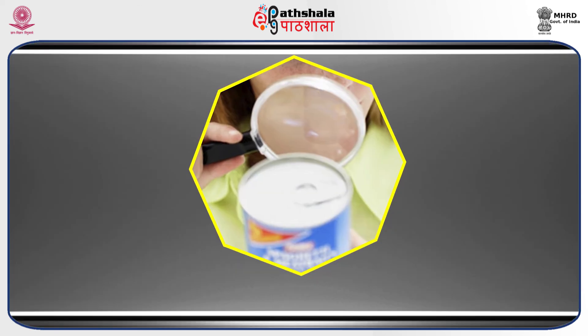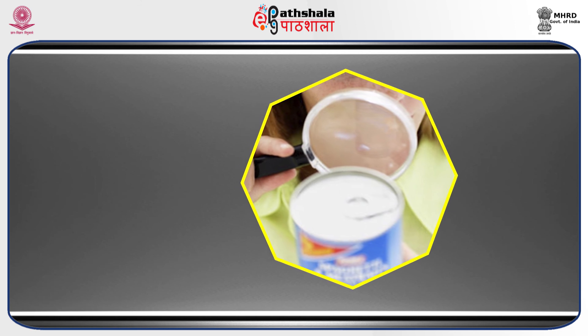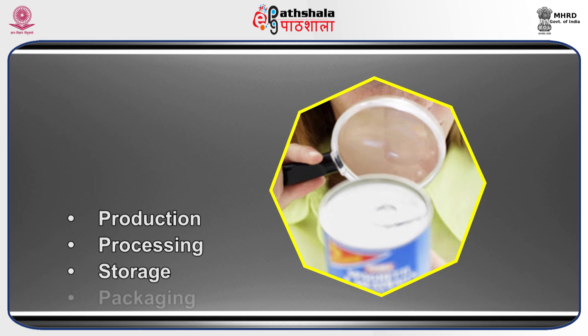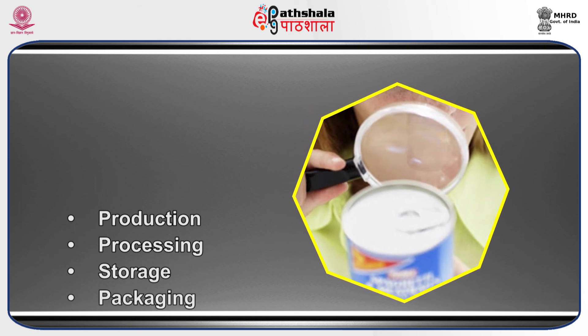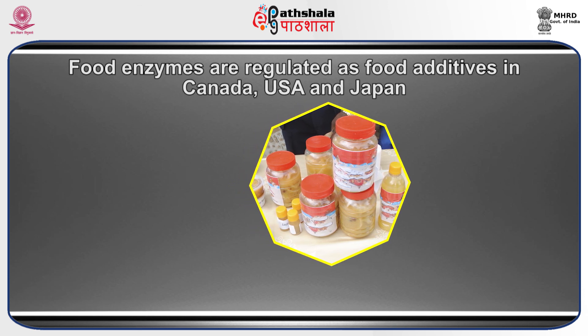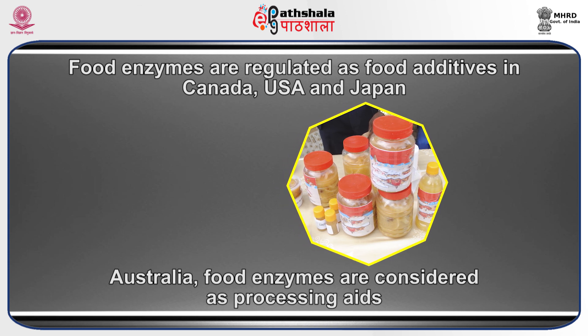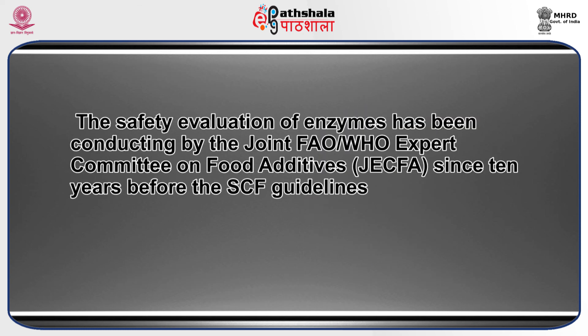There is a difference with regard to food additives and processing aids in food legislation on food enzymes. Food additives are substances or a mixture of substances other than basic foodstuff which are present in food as a result of any aspect of production, processing, storage, or packaging; the term does not include chance contaminants. Processing aids, however, do not have any technological effect on the finished food product. All food enzymes are regulated as food additives in Canada, USA, and Japan, whereas in Australia food enzymes are considered as processing aids. The safety evaluation of enzymes has been conducted by the joint FAO and WHO Expert Committee on Food Additives.